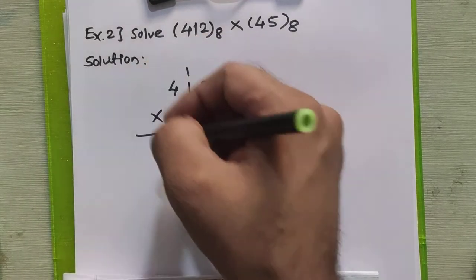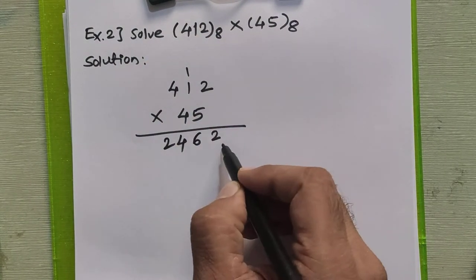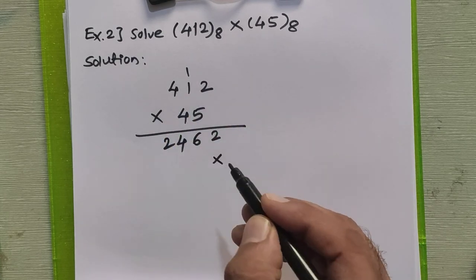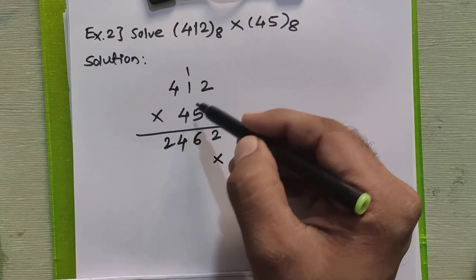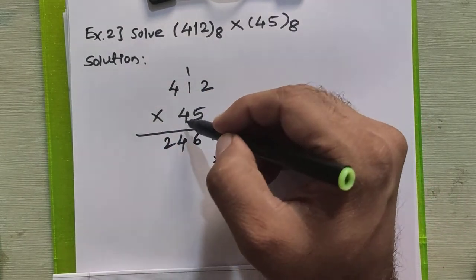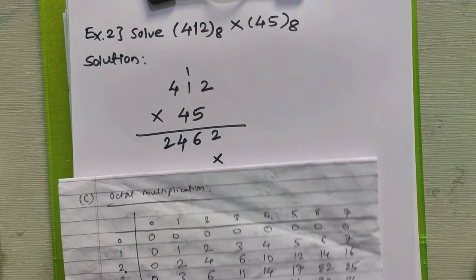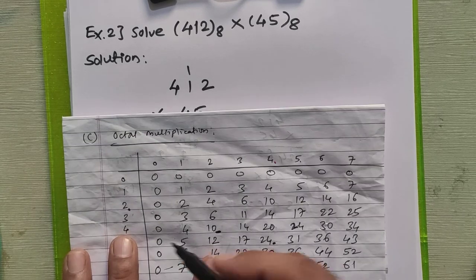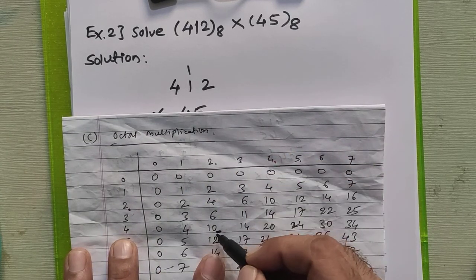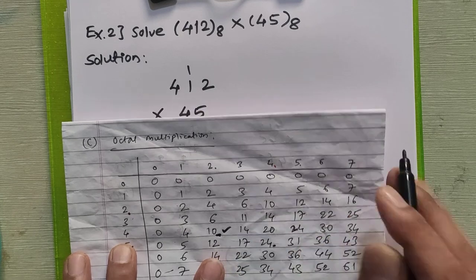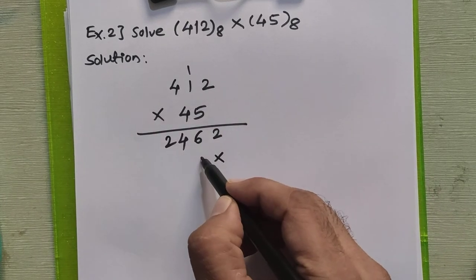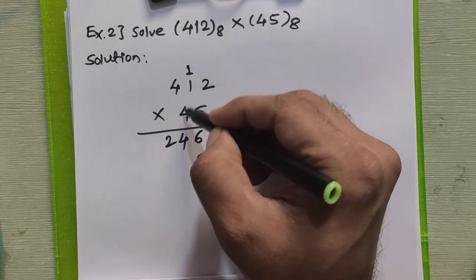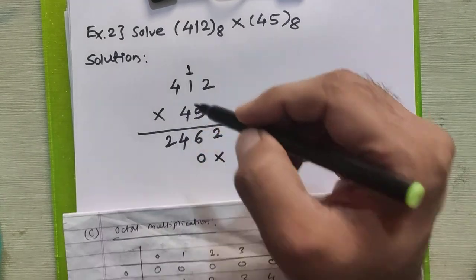That completes the multiplication by 5. Now multiply 4 with all digits. 4×2=8, and 8 in octal is 10 — write 0, carry 1. Then 4×1=4, plus carry 1 is 5 — write 5.